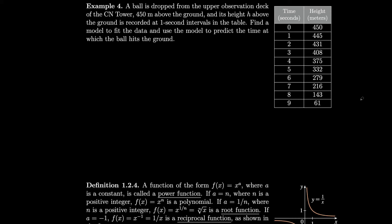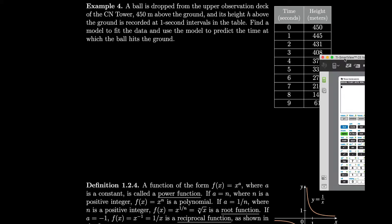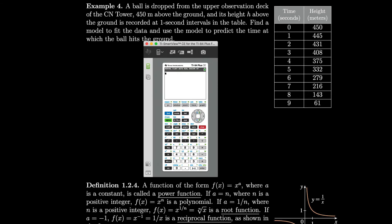Example 4: A ball is dropped from the upper observation deck of the CN Tower, 450 meters above the ground, and its height h above the ground is recorded at 1-second intervals in the table. Find a model to fit the data and use the model to predict the time at which the ball hits the ground. Let's use our calculator emulator — we'll go to stat, edit, clear the old data, and enter our new data.